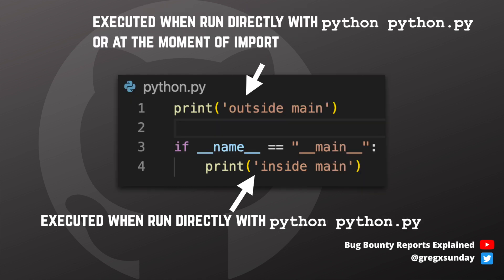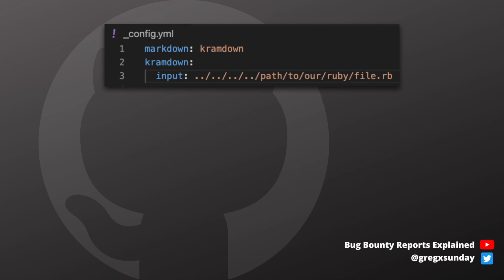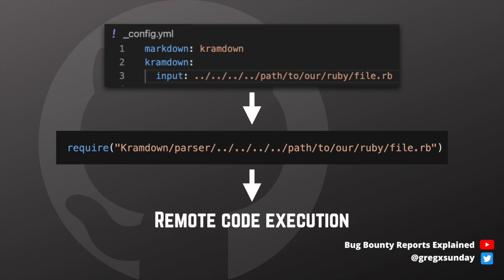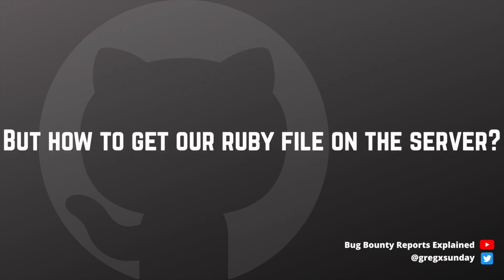The way Ruby imports work is that it executes the file straight away after importing, even before you call any function. It works the same way in Python, and that's why the 'if __name__ == __main__' guard is commonly used there. That means we can import an arbitrary Ruby file from the server and it will be executed.